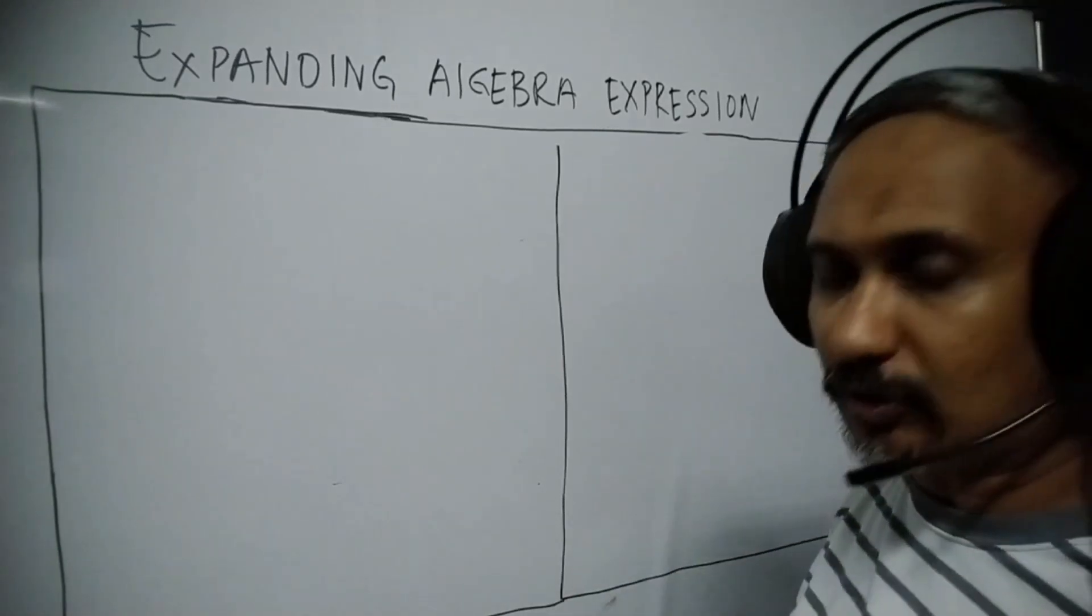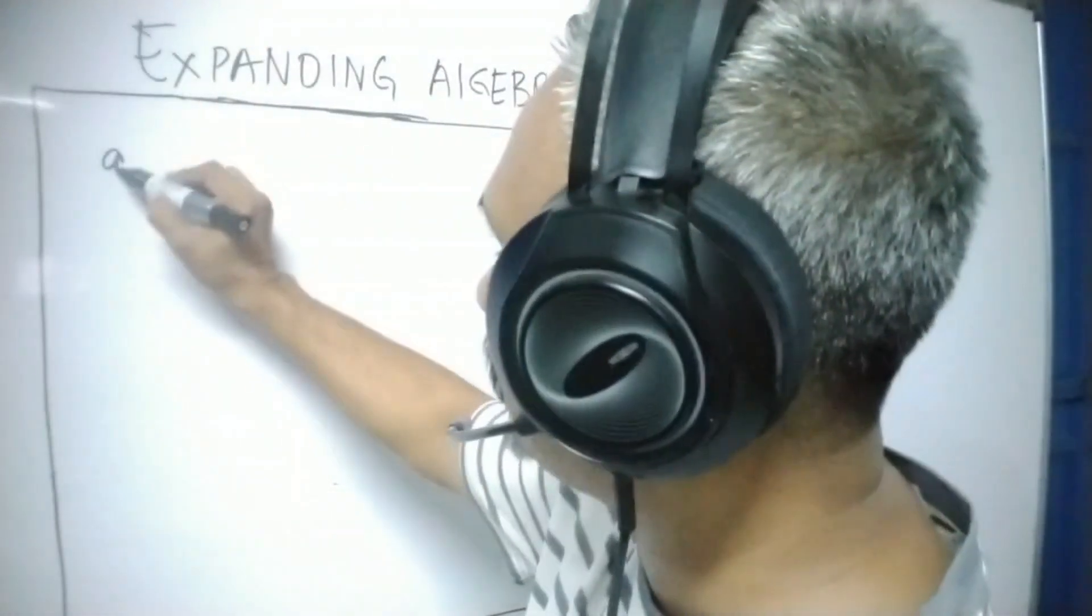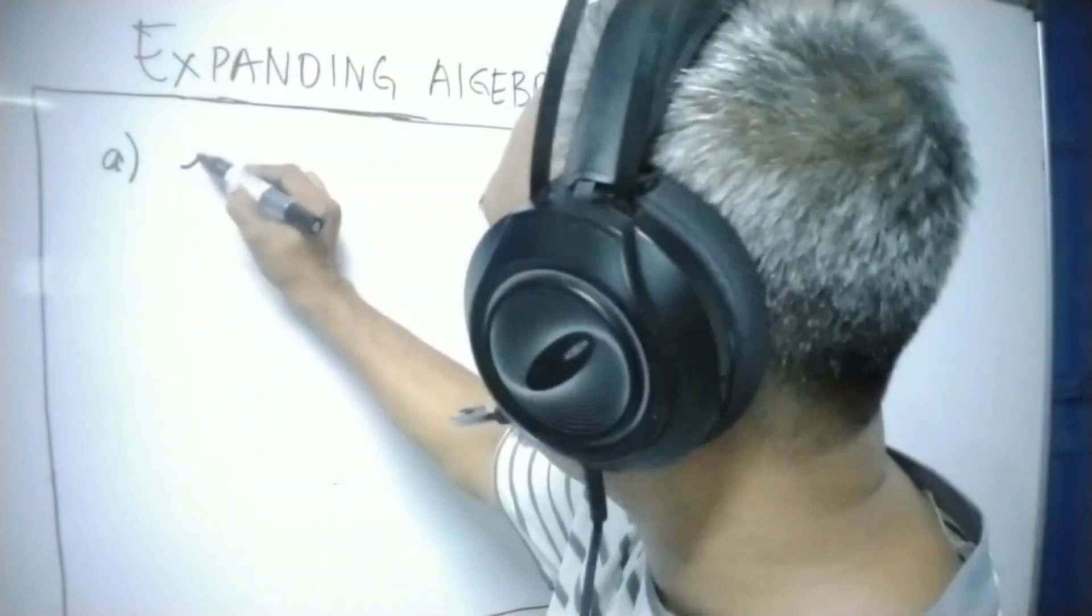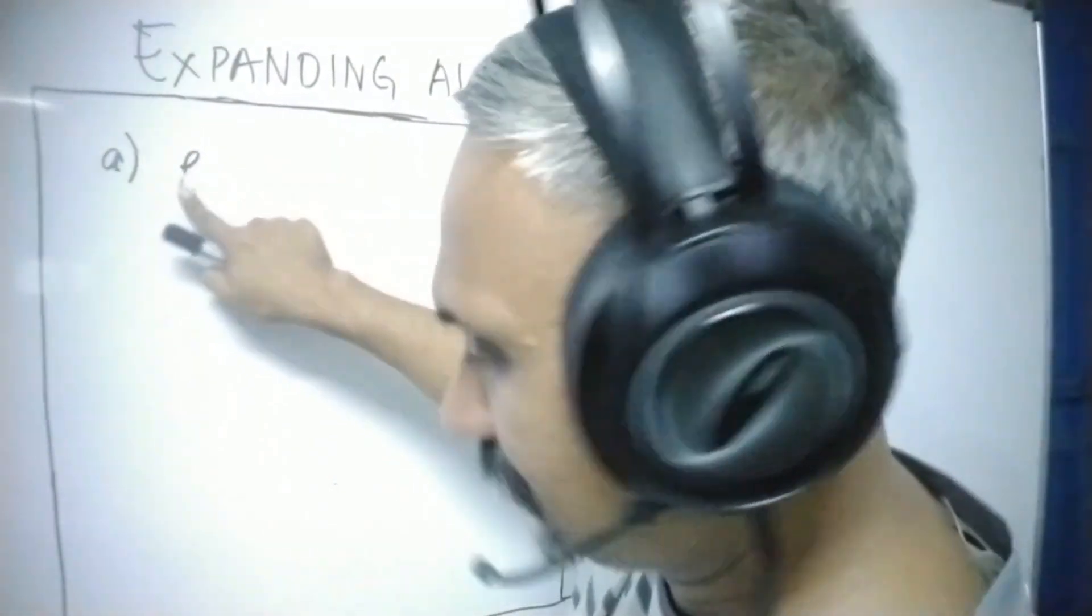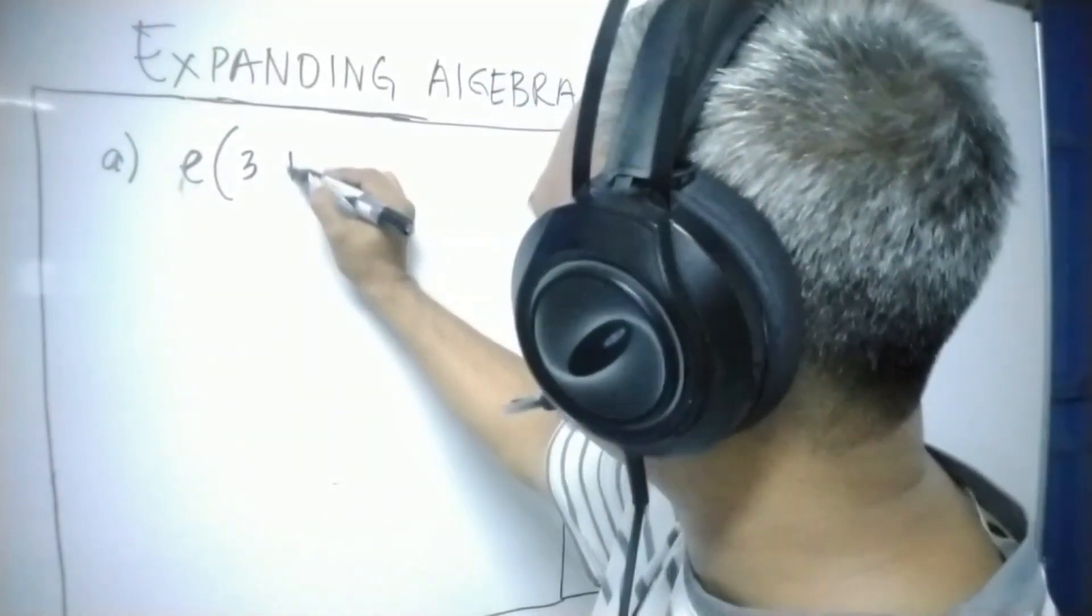Okay, so without further ado, we have the first question A: E times 3 plus 4E.